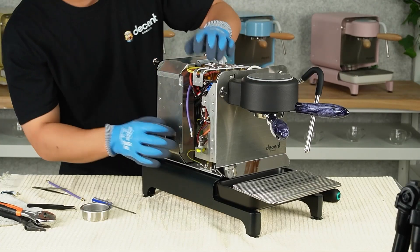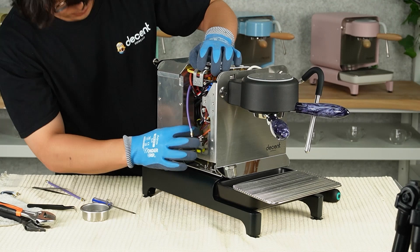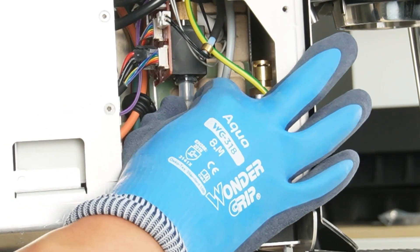Put on comfort grip gloves to protect your hand from the sharp chassis edges. Then unplug the return tube.